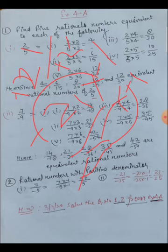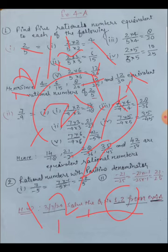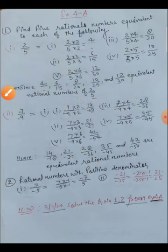Attendance is compulsory — please write your name, class, and section in the comment box. Today's homework is to solve Exercise 4A, questions one and two in your note copy. If you want to write notes, pause the video and write — covering the rational number definition, important points, equivalent rational numbers, and positive and negative denominator rules. Thank you and take care.